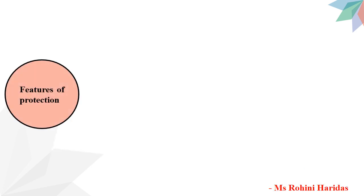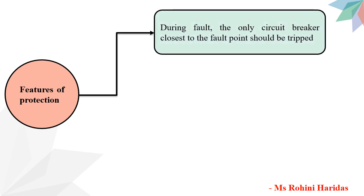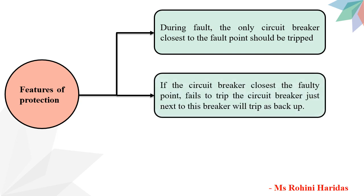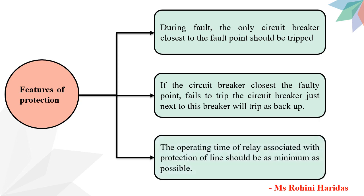Now let us see the features of protection. The first one is: during a fault, only the circuit breaker closest to the fault point should be tripped, meaning all other circuit breakers should remain closed to achieve selectivity. Next, if the circuit breaker closest to the faulty point fails to trip, the circuit breaker just next to it will trip as backup protection. Third, the operating time of the relay should be as minimum as possible in order to preserve system stability.